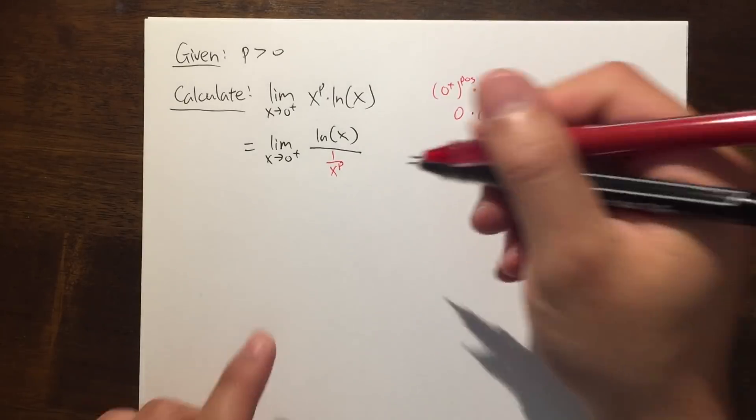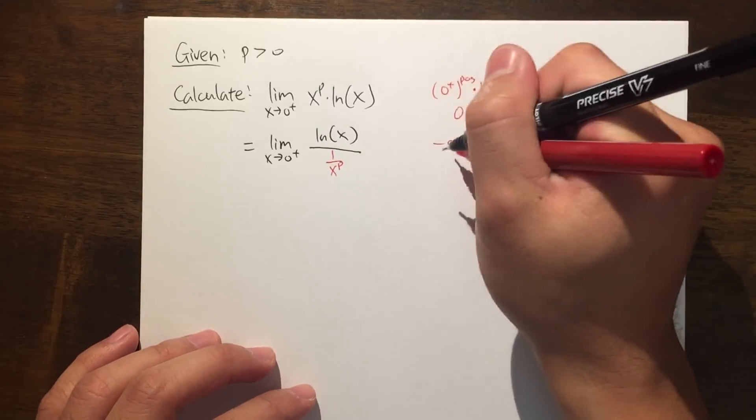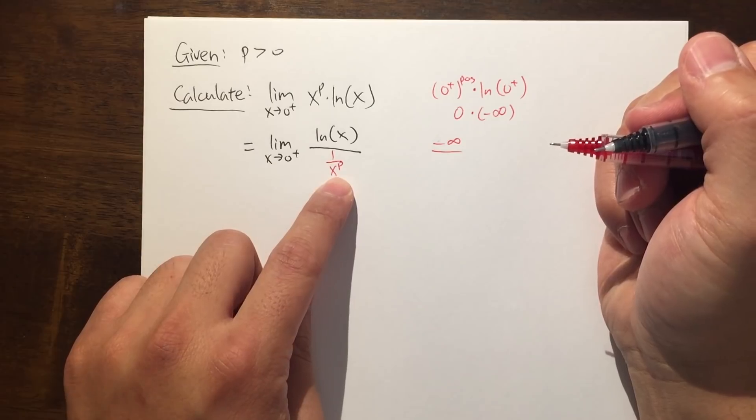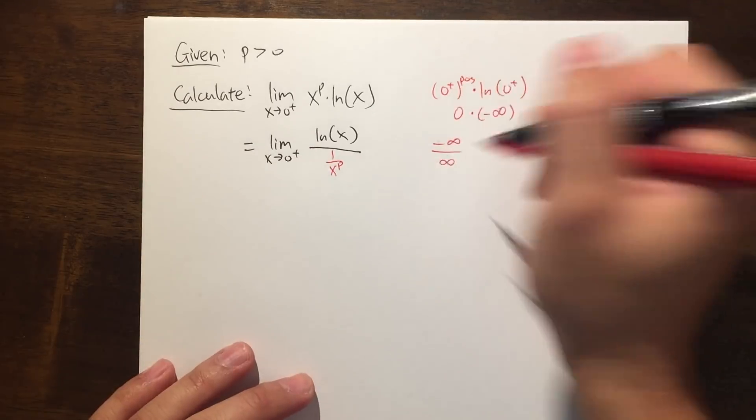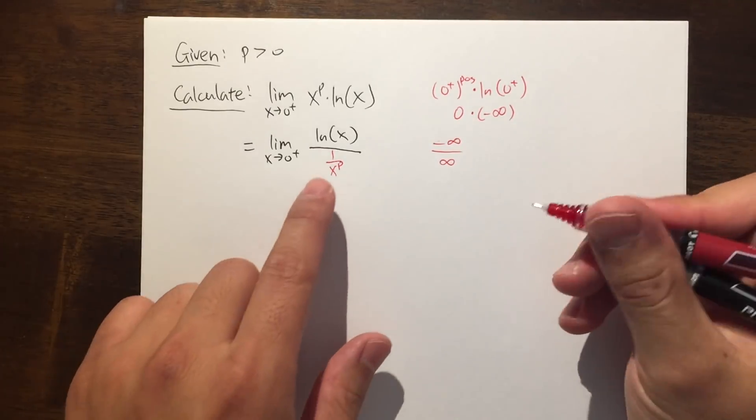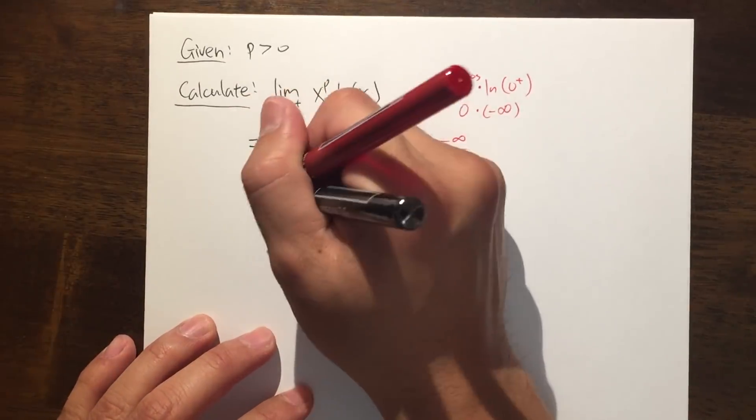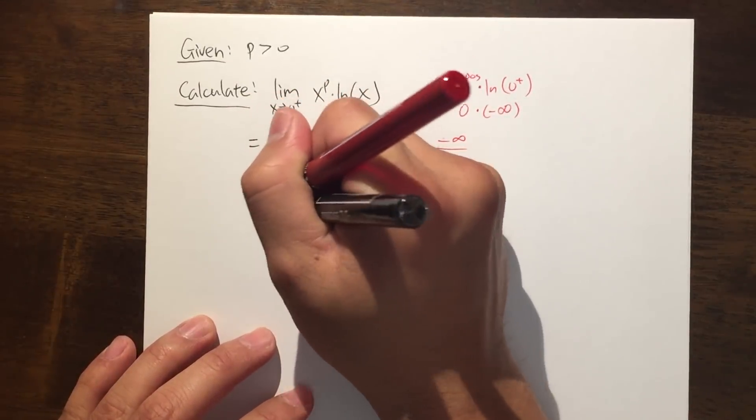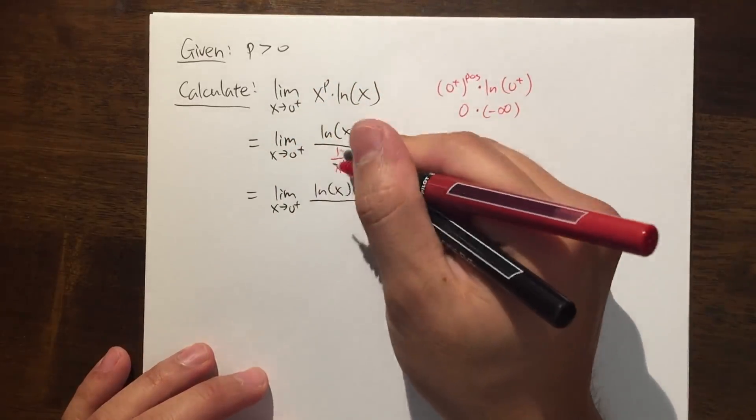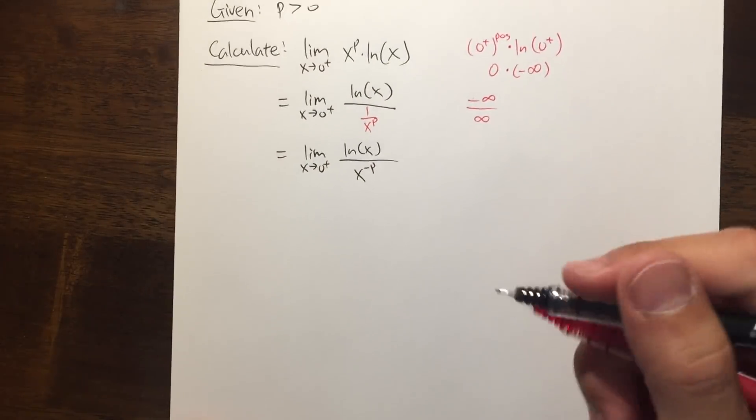Now, once we have this, you can verify we get negative infinity over, when x is approaching to 0 plus in the denominator, you get infinity. So this right here, we can actually use L'Hôpital's rule. But I don't want to really look at this to differentiate. So let me write this down again as the limit as x approaching to 0 plus, ln x on the top over x to the negative p's power.